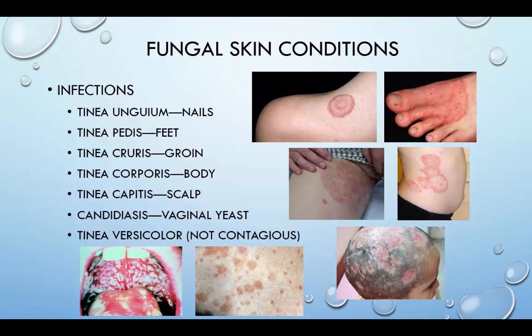Tinea corporis gladiatorum is tinea of the body. It is characterized by circular, pruritic patches that are well-demarcated and scaly with raised borders and a central healing zone. These well-defined central rings are generally found on the upper extremities, axilla, and trunk. Tinea capitis is ringworm of the scalp. Its primary sources of infection are contaminated hairbrushes, combs, and even animals. This begins as a small papule on the scalp and spreads peripherally. The lesions appear as small gray scales, resulting in scattered bald patches.